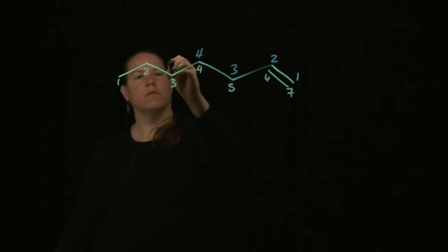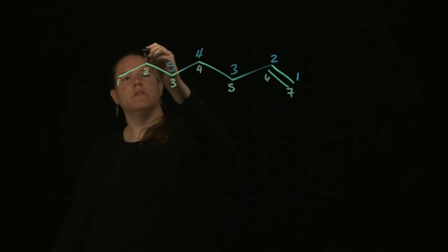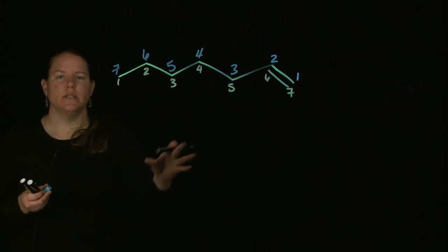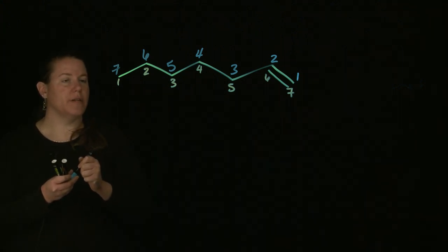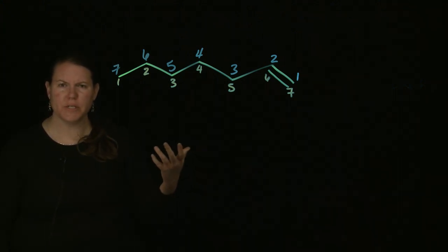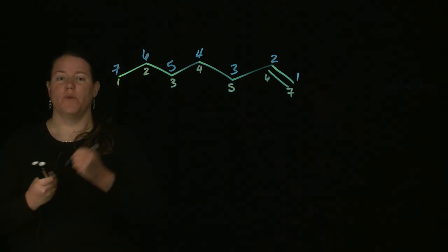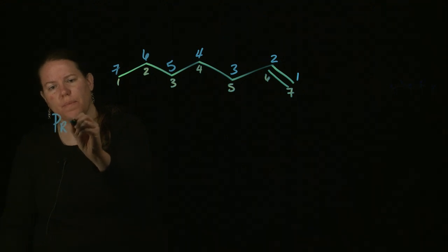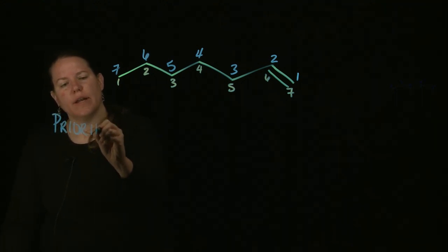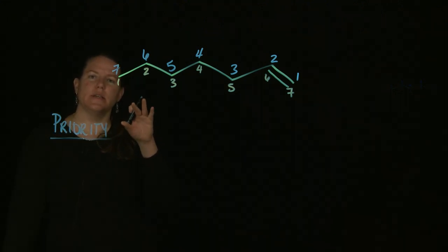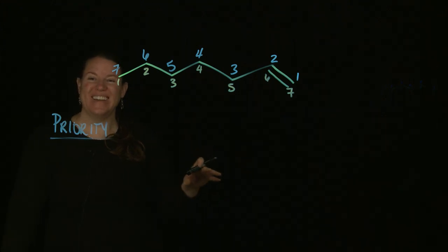One, two, three, four, five, six, seven. We need to pick which numbering is better for this molecule. The question is, do we have anything that we need to worry about that has maybe what we call priority in organic chemistry? Priority is giving things that are more important the lowest number possible and indicating them somewhere in the name.